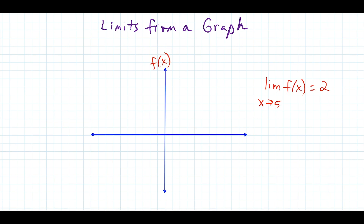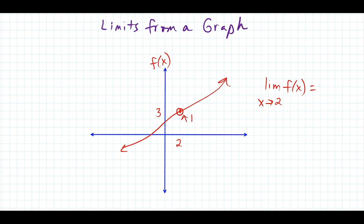I'm going to draw this a little bit different. Now let's say the function is not defined at this location — there's a hole in the graph here. This is the point 2, 3. If I wanted to find the limit as x approaches 2 of this function, it's as simple as identifying the y value. Even though there's a hole here at the point 2, 3, that y value is still our limit.